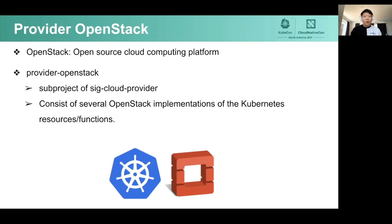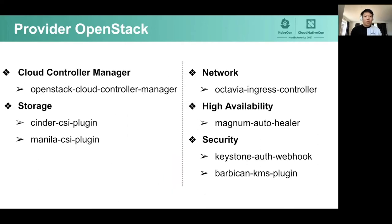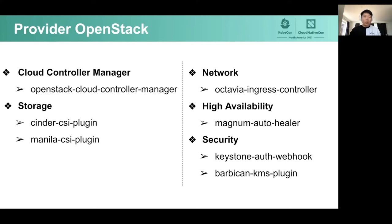There are a bunch of components in Provider OpenStack to implement Kubernetes resources and functions. The two important ones are OpenStack Cloud Controller Manager and the CSI plugins. We also have Octavia Ingress Controller, which implements the Ingress resource in Kubernetes, and Magnum AutoHealer to achieve high availability of cluster nodes. In the security area, we have Keystone Auth Webhook for RBAC, and Barbican KMS plugin for secret data encryption.